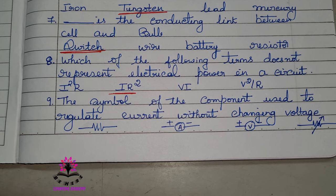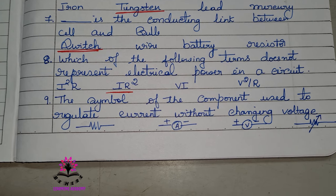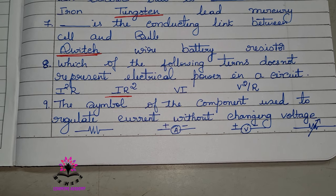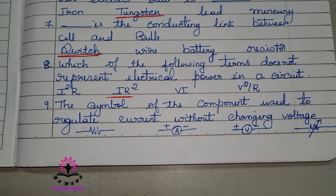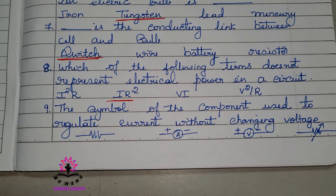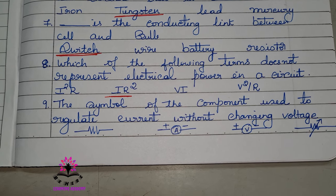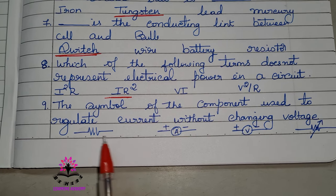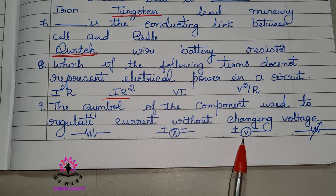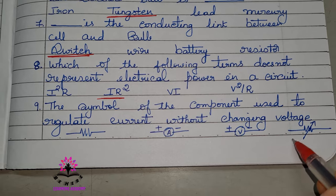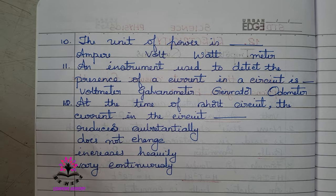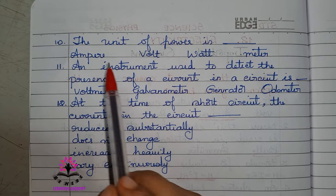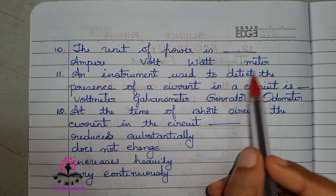Question number eight: which of the following terms does not represent electrical power in a circuit? Out of the four options, option number two, IR², is not representing electrical power. Next question: the symbol of the component used to regulate current without changing voltage. Question number ten: the unit of power is dash — ampere, volt, watt, or meter. The answer is watt.